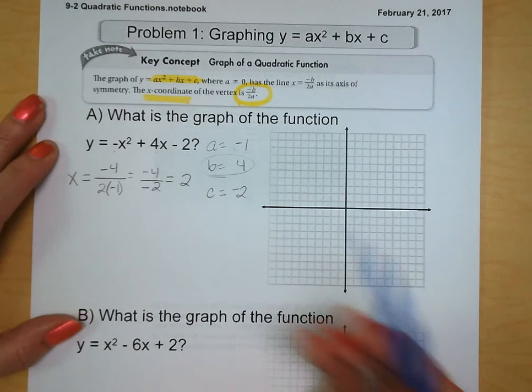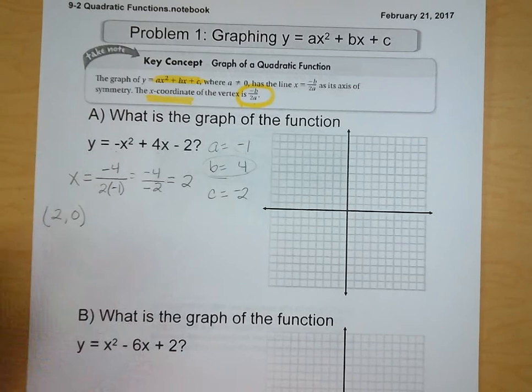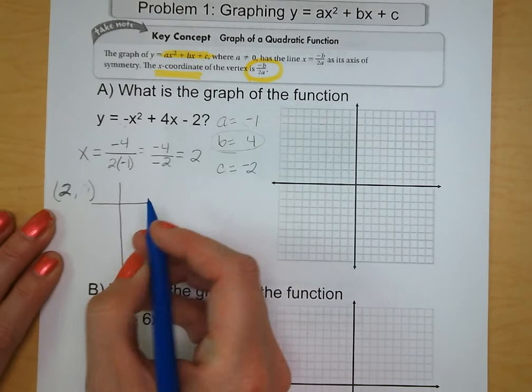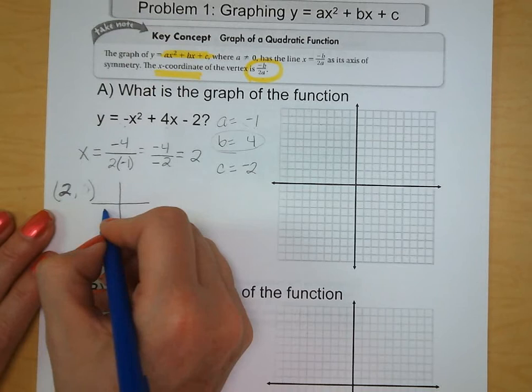So negative 4 over negative 2 reduces to a positive 2. We know our x value, our vertex x-coordinate is positive 2. Now we create our table, and we're going to set 2 up right in the middle with a couple points to the left and right. So we go 0, 1, 2, 3, and 4.